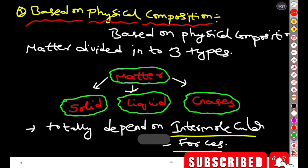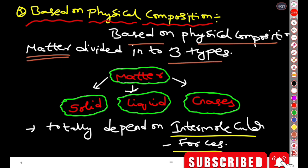Based on physical composition — physical means appearance — by the appearance we classify matter into three types: solid, liquid, and gases.